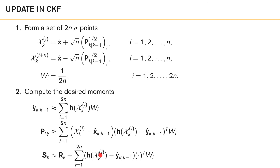The update step in the cubature Kalman filter works the same way. We select a set of sigma points that match the predicted density computed in the prediction step, compute the expected values by plugging the sigma points into the expressions, and then calculate the weighted averages. And that's it.